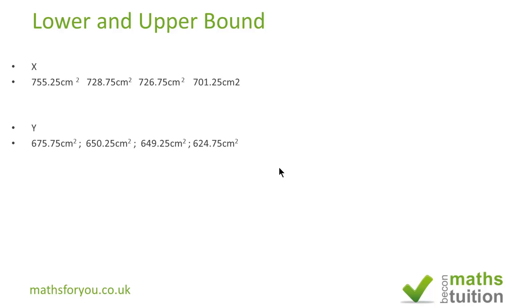So we need to divide the smallest area of box Y by the largest area of box X. That would be 624.75 divided by 755.25, which gives us 0.82721.